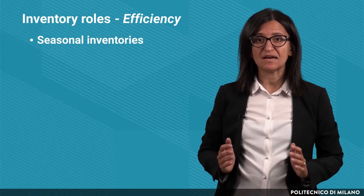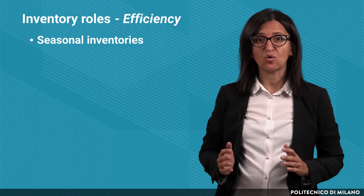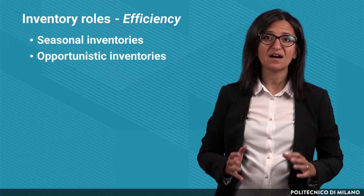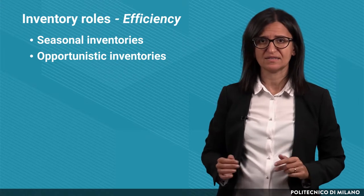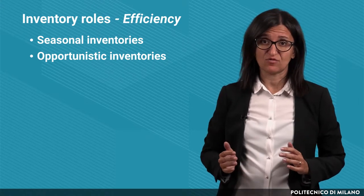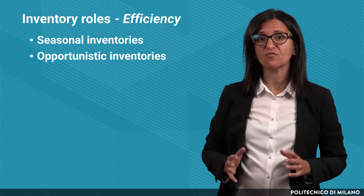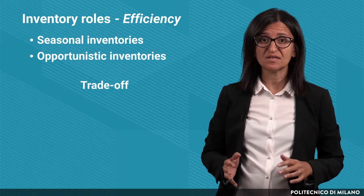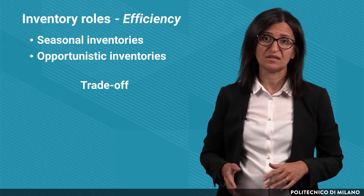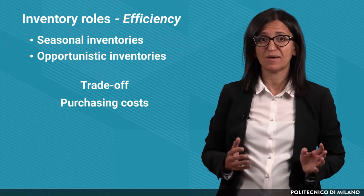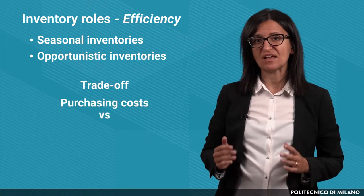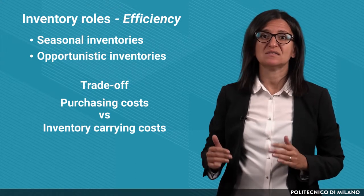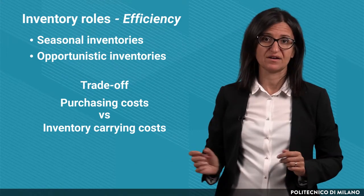A second example is that of the so-called opportunistic inventories. They allow buying large lots of goods at low prices. This is the case, for example, of promotions or volume discounts. The trade-off to be considered in this case is between the purchasing costs, which are expected to decrease, and the inventory carrying costs, which are instead expected to increase, since the average stocks will be higher.